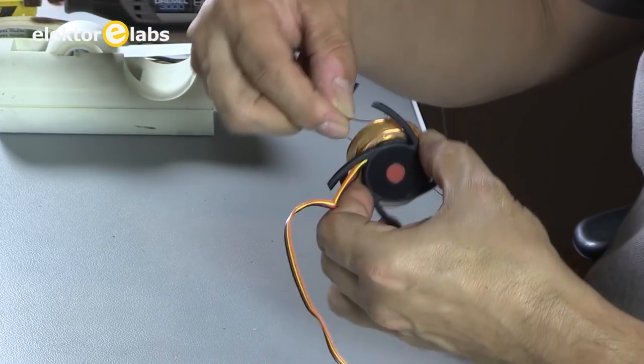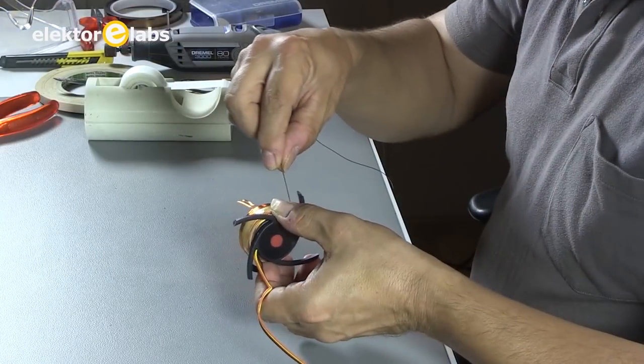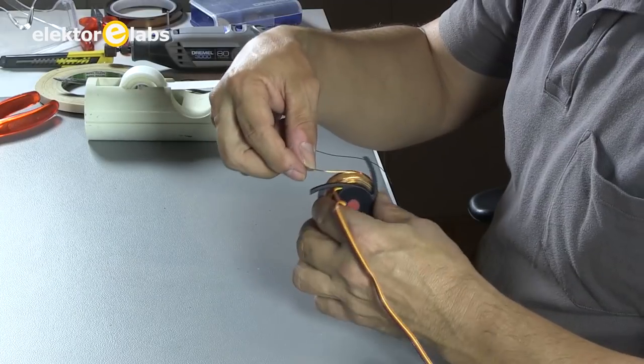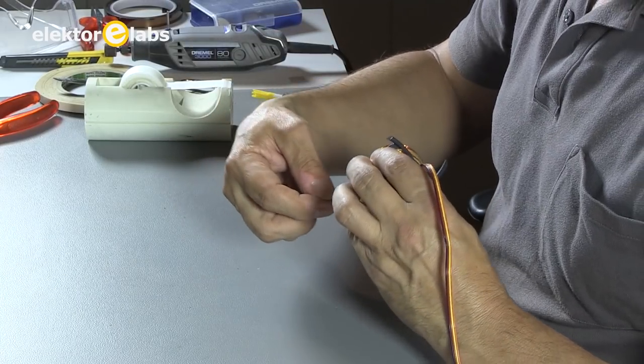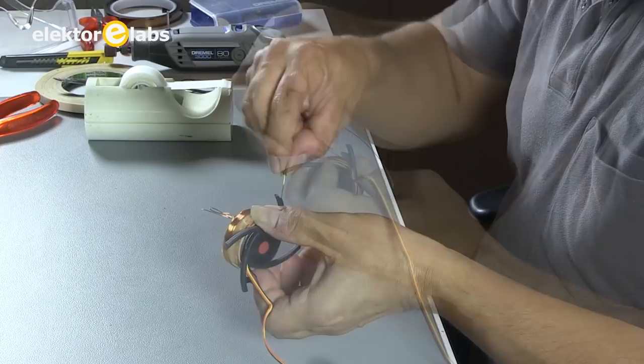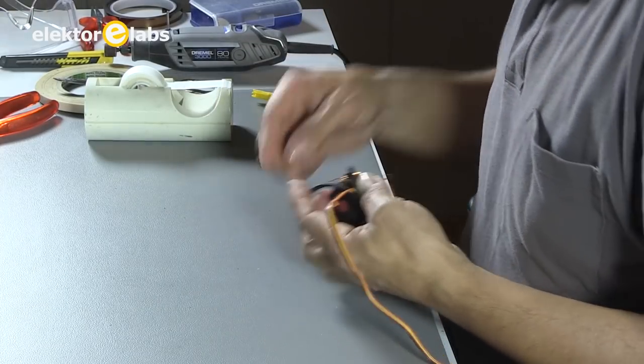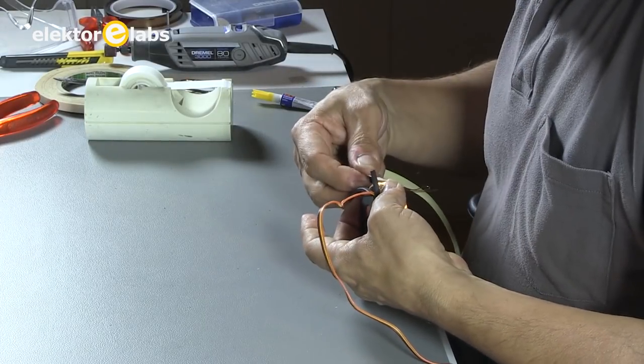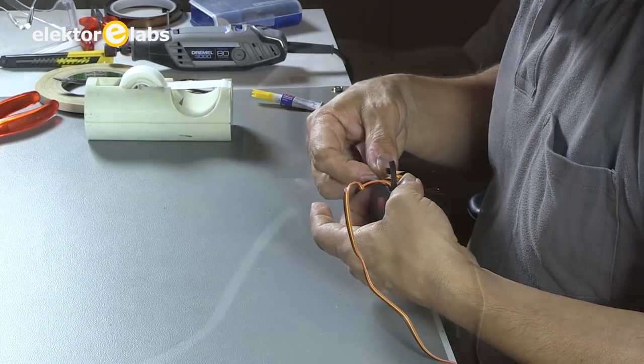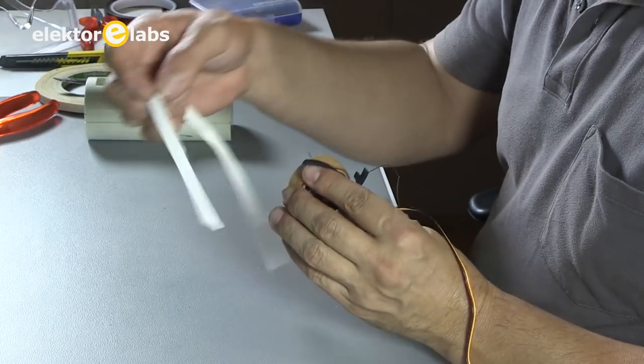Let's now wind the third layer towards the bottom, around 26 turns. Then let's add a layer of double-sided tape, before winding the final layer upwards, which will be around 25 turns.